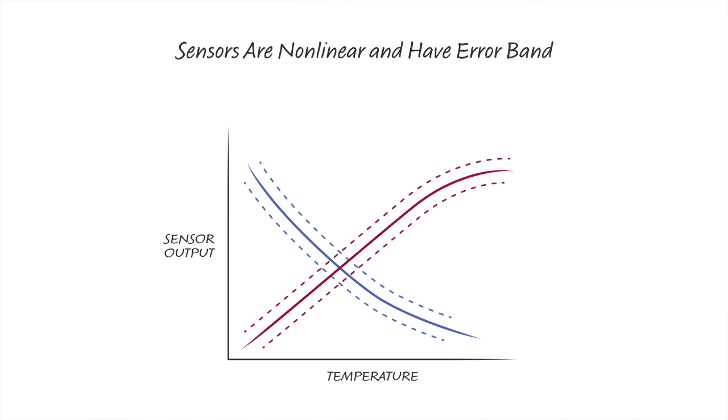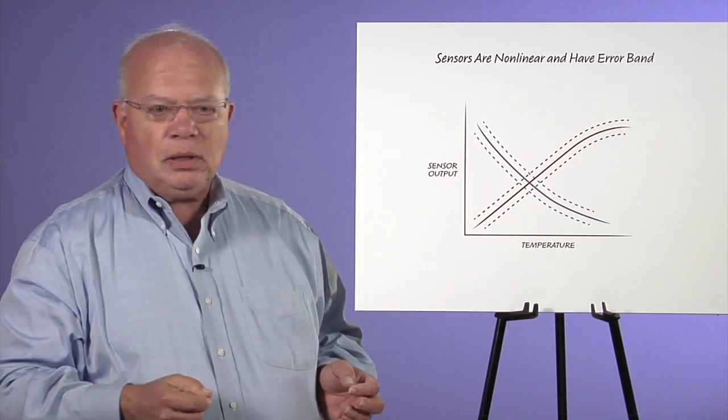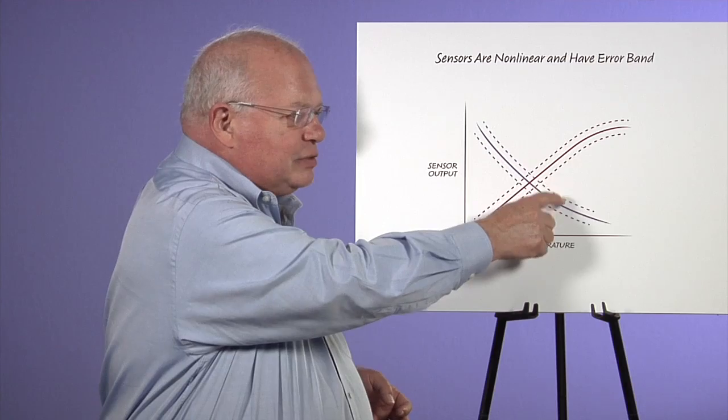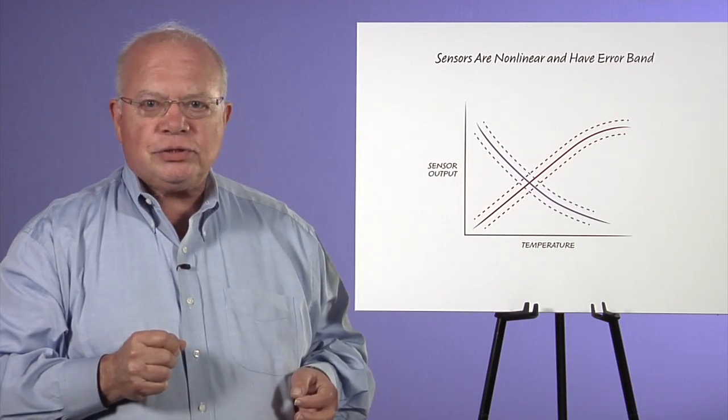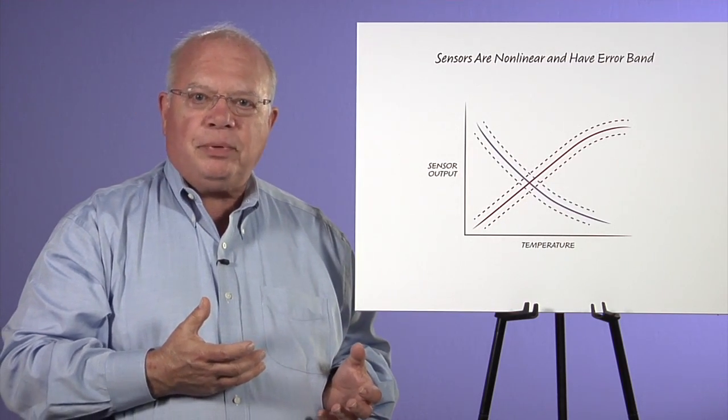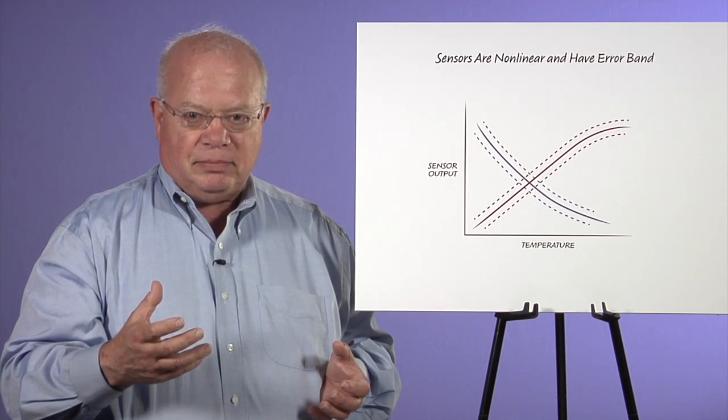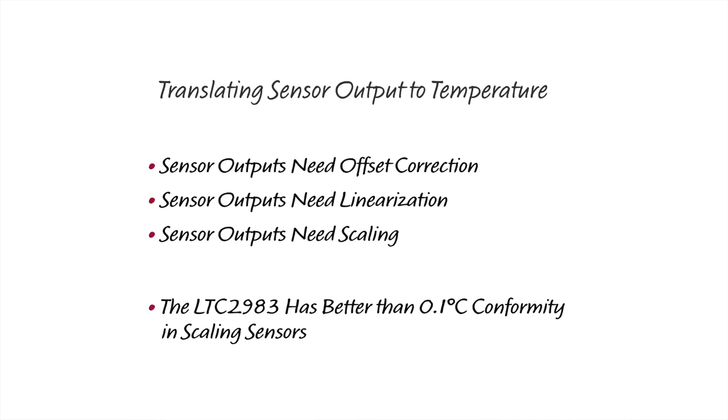When we've got these temperature sensors, we have to do a lot of correction to turn the output into a real temperature. The sensors are not linear. They have offset and can be anywhere in range. They need a scale factor because their output in terms of millivolts or microvolts per degree C is not always the same. So we have to provide offset correction, scale factor correction, and linearity correction, and that's all done in a digital processor in the 2983.